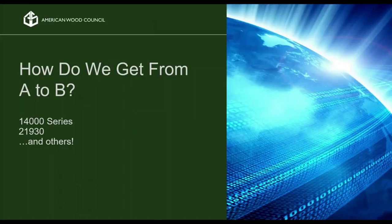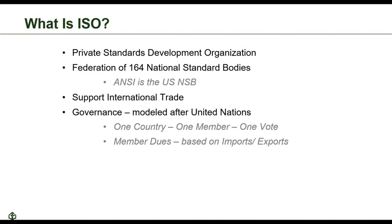We've already mentioned EPDs and environmental aspects of our products — what do these terms come from, and how are they created? ISO is one of the places we turn to when looking for international standards that serve as the rules for how we go about developing EPDs, PCRs, and associated environmental communications. ISO is a private standards development organization made up of a federation of 164 national standards bodies. ANSI is the U.S. national standards body, and every country gets one vote. We have to come up with a consensus at the national level, and then come to a consensus at the international level.